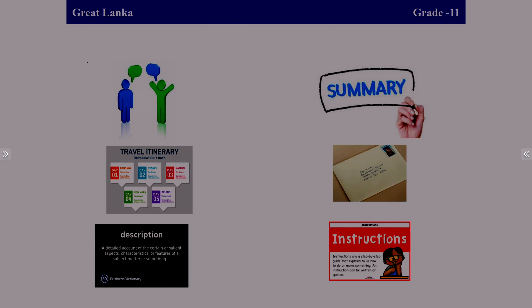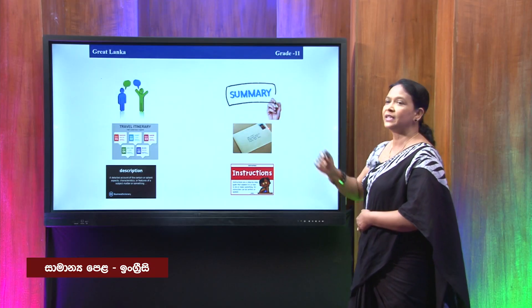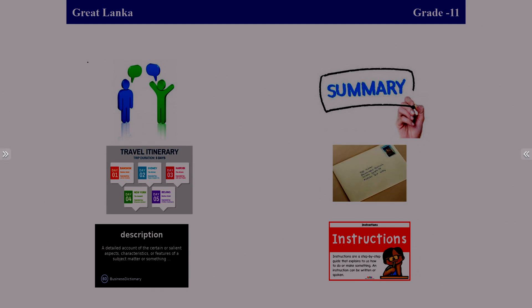In our day-to-day life, to get information we may have to read a dialogue, sometimes a summary, sometimes a travel itinerary. What do we mean by a travel itinerary? It is the plan of a tour. For example, if you are planning a three-day trip, you write on the first day where you go, what you will see, and what activities you will do. That travel plan is called an itinerary. We also have letters, descriptions, and instructions, but for this lesson we will just take these as examples.